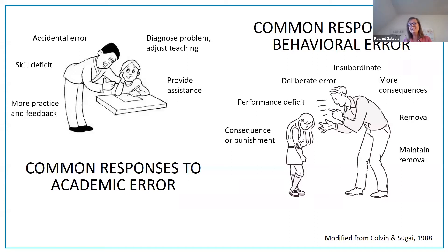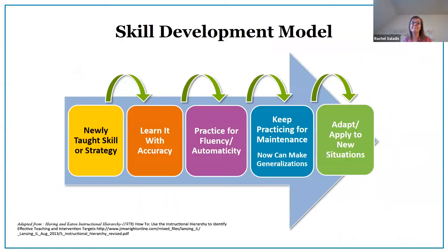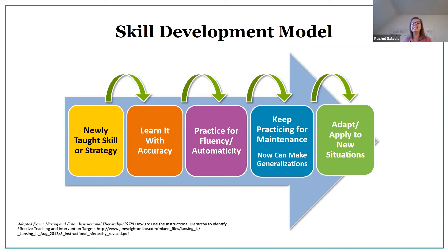That removal is often maintained until it's felt that the student has learned their lesson. In the world of academics, a new skill is taught, learned, and practiced with accuracy until students are fluent. They're provided opportunities for ongoing practice which leads to generalization, until students demonstrate their ability to apply that skill to more than the original situation.